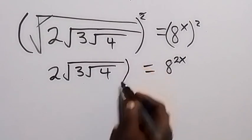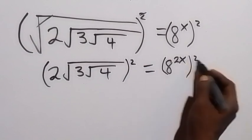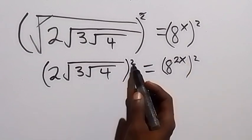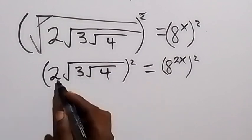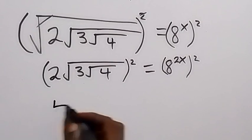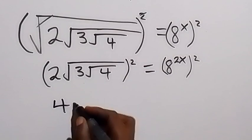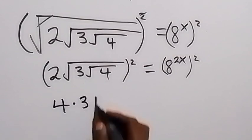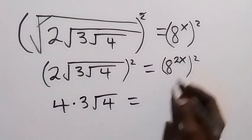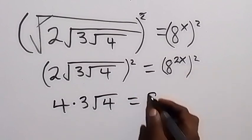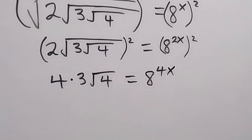In the next step, we also take the square on both sides. The square will affect 2 and also this root, so 2 squared gives us 4, then the square cancels the square root, giving times 3, then root 4, which equals 8 raised to power 4x.